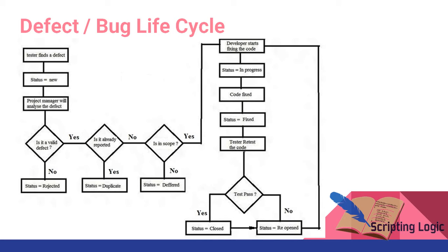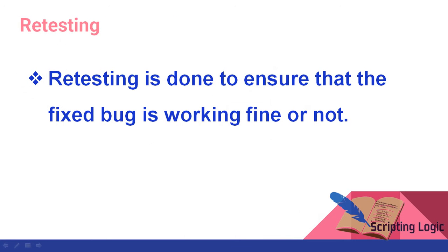If the test is passed, then the status of that bug is closed. And if not, then the status is reopen. Now again it is reassigned to the developer and it starts fixing the code, and the cycle continues.